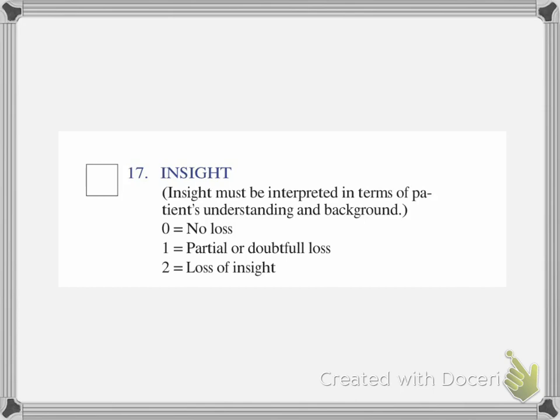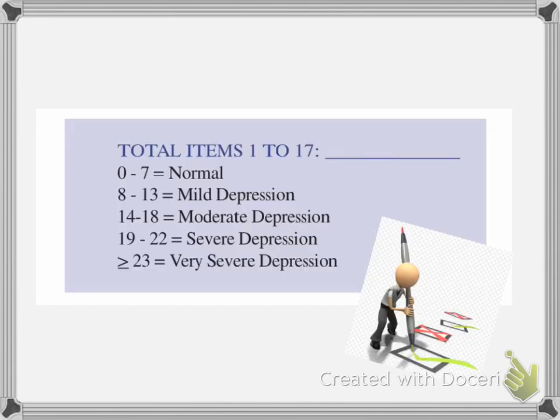So you mark up the numbers: zero to seven is normal, eight to thirteen is mild depression, fourteen to eighteen is moderate depression, nineteen to twenty-two is severe depression, and over twenty-three is very severe depression.